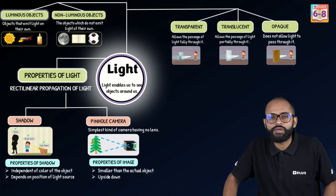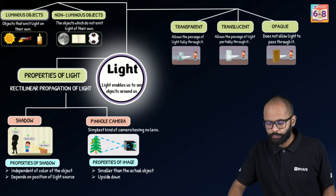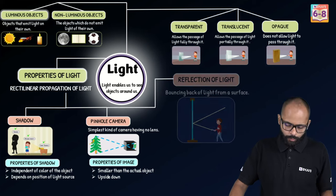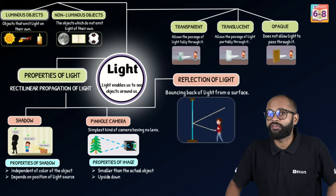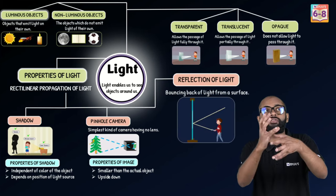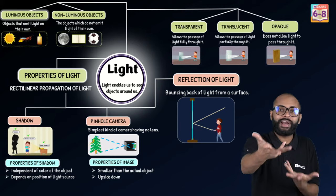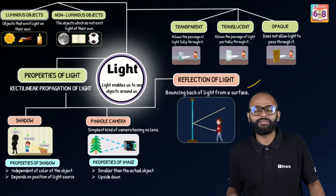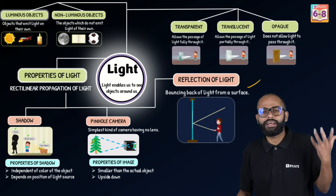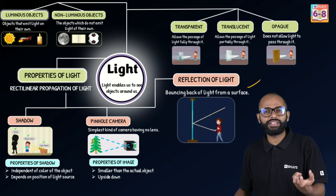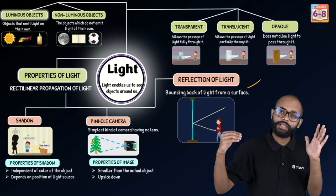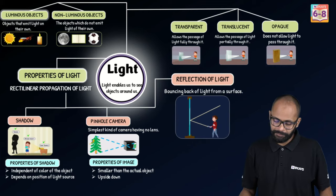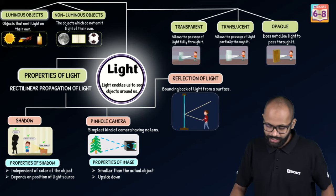All of this is possible because of rectilinear propagation of light. Now let's talk about another phenomenon — reflection of light. Reflect means the bouncing back of light in the same medium. That is what we call reflection of light. You don't need to rote-learn this — reflection means to bounce back in the same medium.